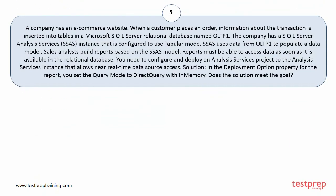Question number 5. A company has an e-commerce website. When a customer places an order, information about the transaction is inserted into tables in a Microsoft SQL Server relational database named OLTP1. The company has a SQL Server Analysis Services instance that is configured to use tabular mode. SSAS uses data from OLTP1 to populate a data model. Sales analysts build reports based on the SSAS model. Reports must be able to access data as soon as it is available in the relational database. You need to configure and deploy an Analysis Services project that allows near-real-time data source access.